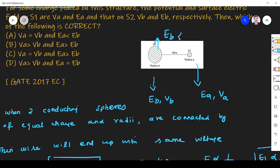Less than EA, that is EA must be greater than EB. So the answer is option C is the right answer. Thank you.